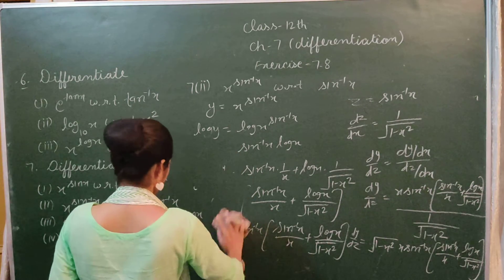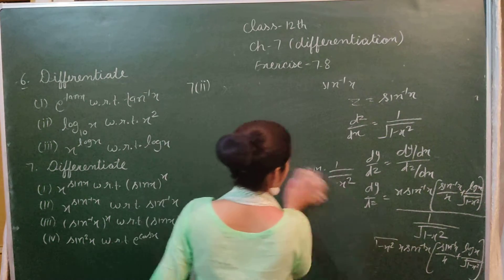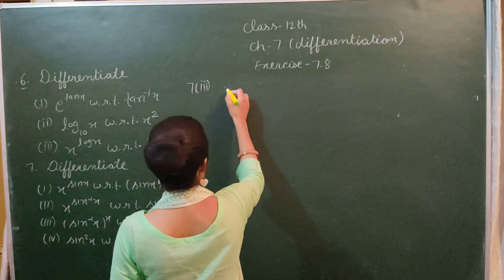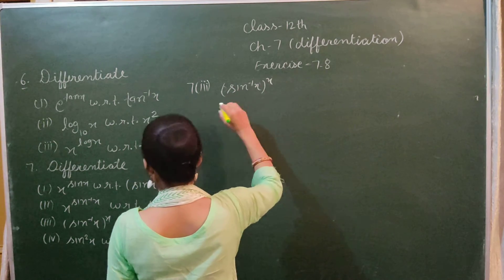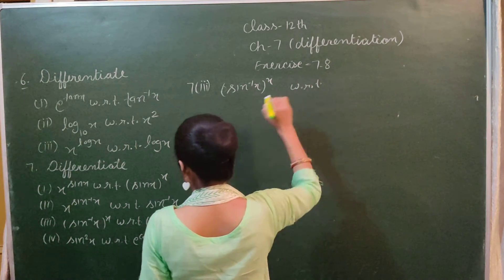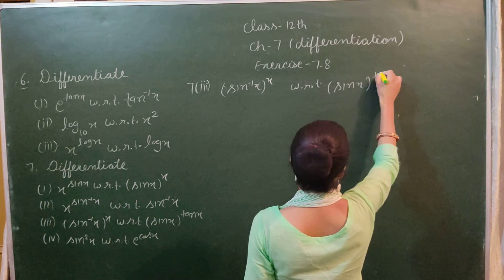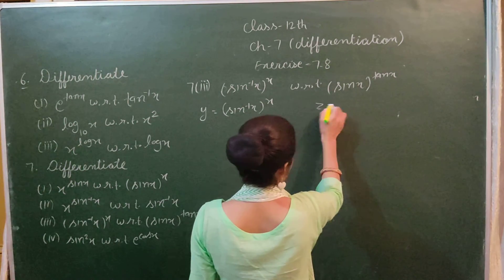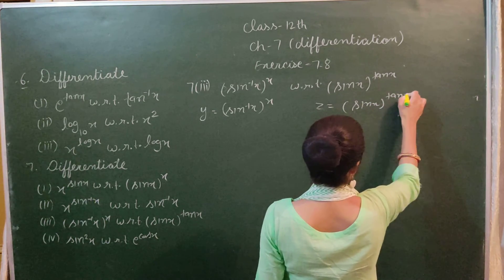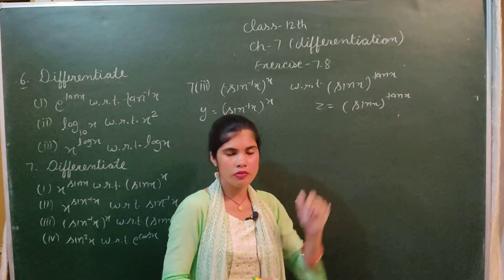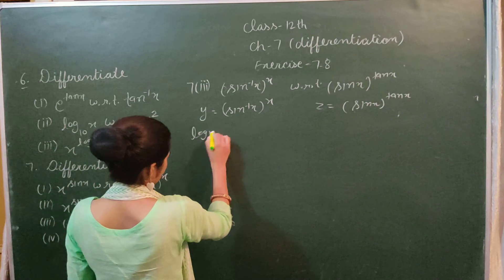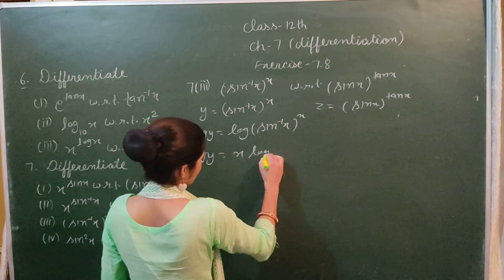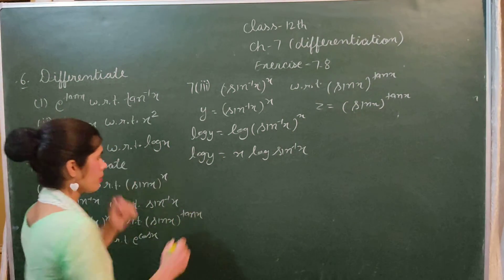Now we will do the third part of the seventh sum. We have to differentiate (sin⁻¹x)^x with respect to (sin x)^(tan x). We let y = (sin⁻¹x)^x and z = (sin x)^(tan x). Taking log on both sides for y: log y = x times log(sin⁻¹x).